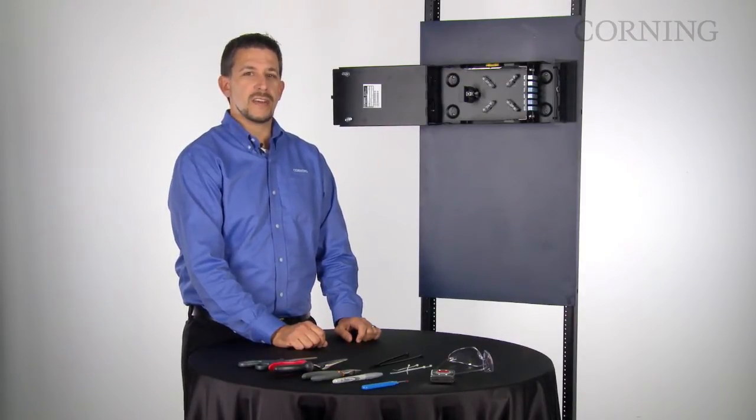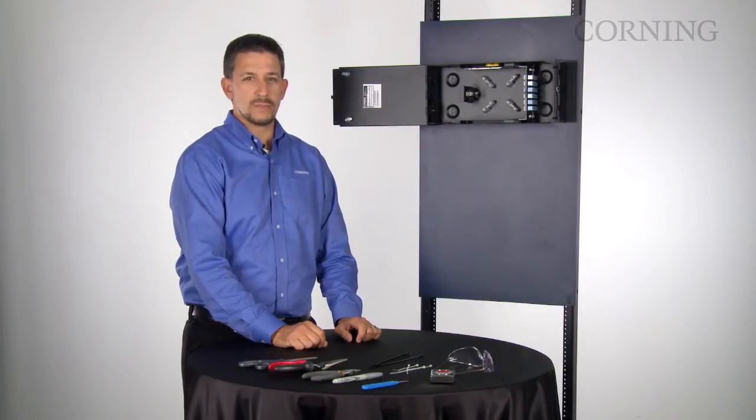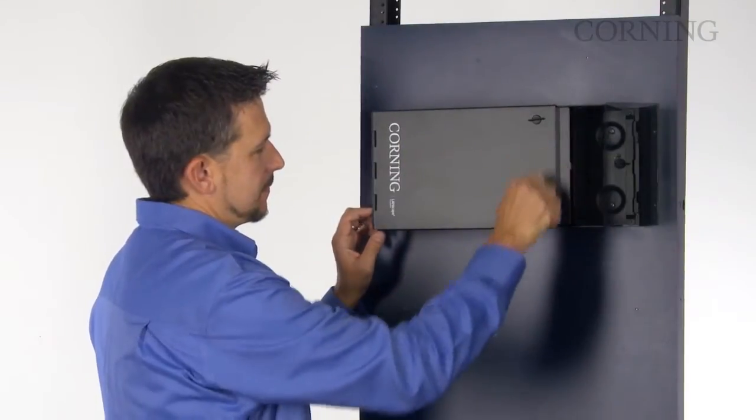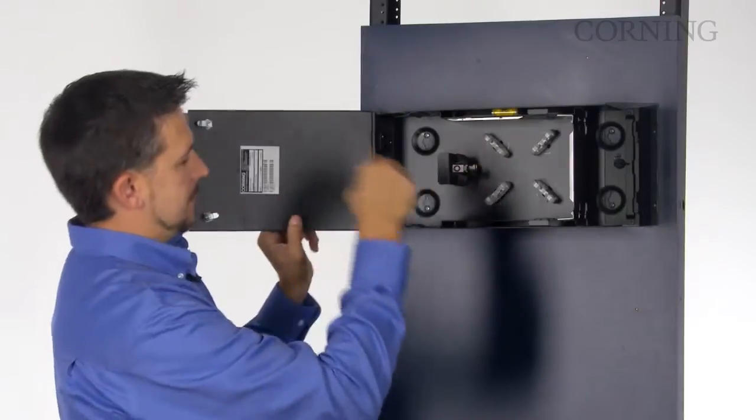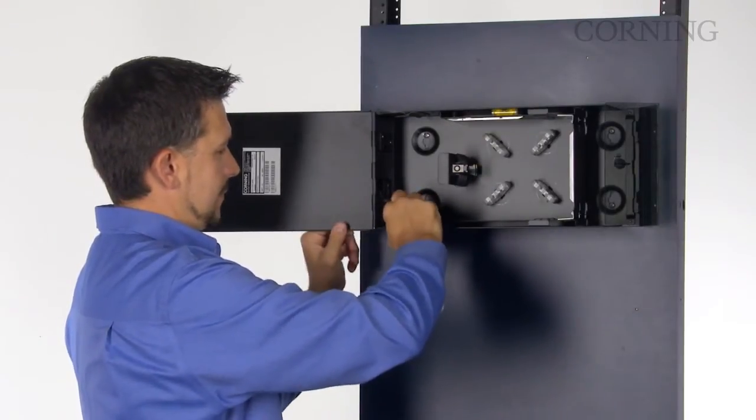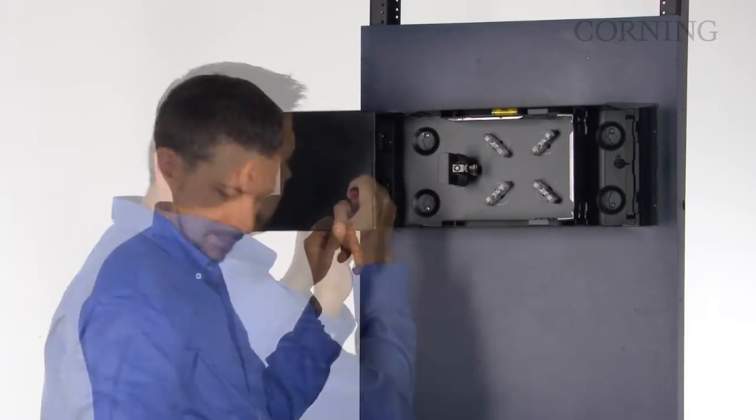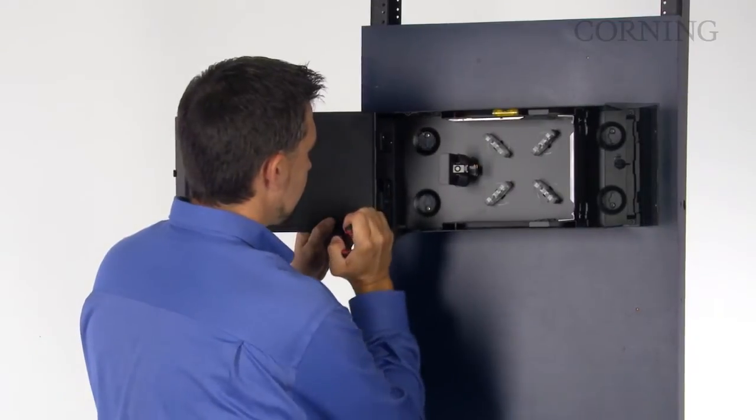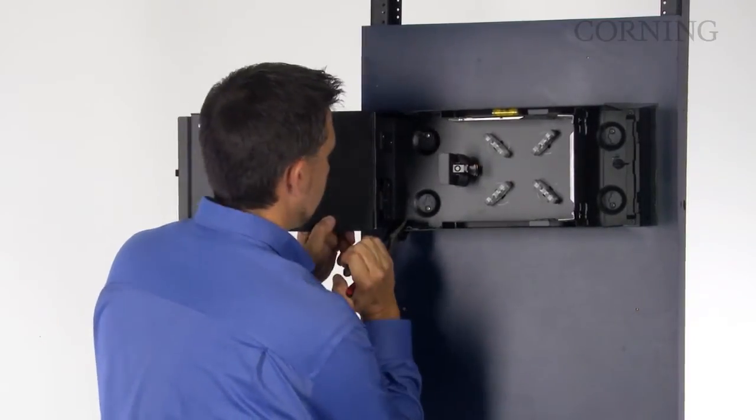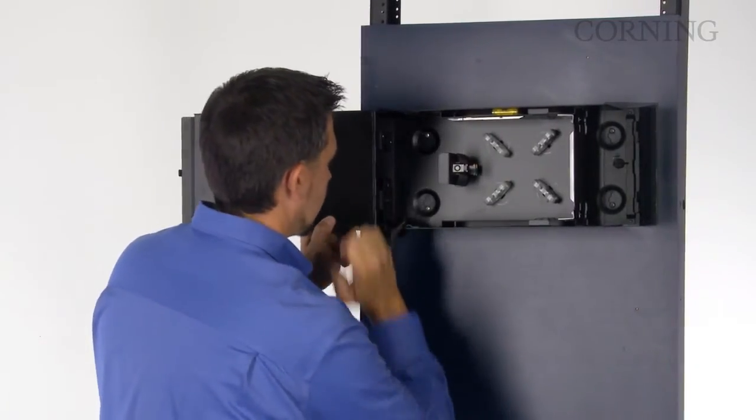The first step is to identify the appropriate knockout for removal. Next, remove the dust brushes so that you don't damage them during the knockout removal. Now you're ready to remove the knockout. Take the pliers and twist the knockout to remove it.